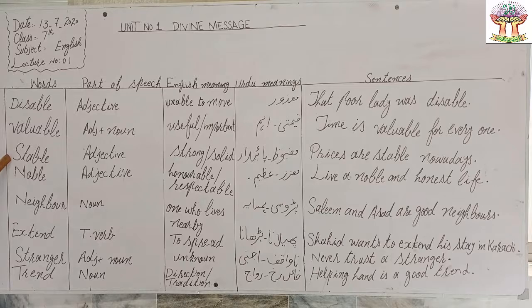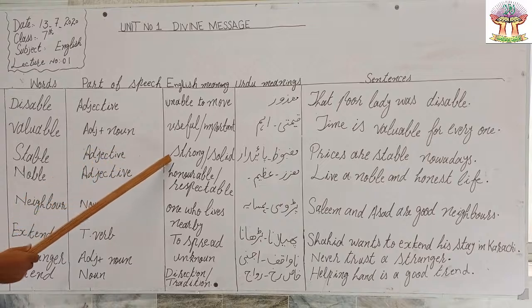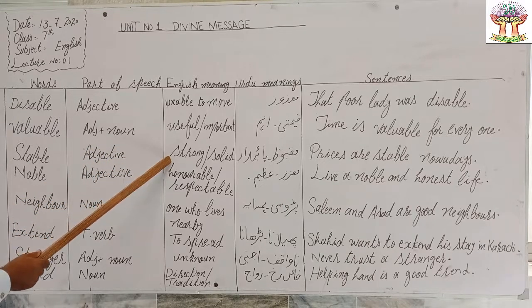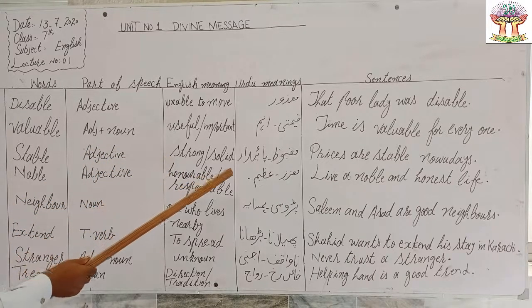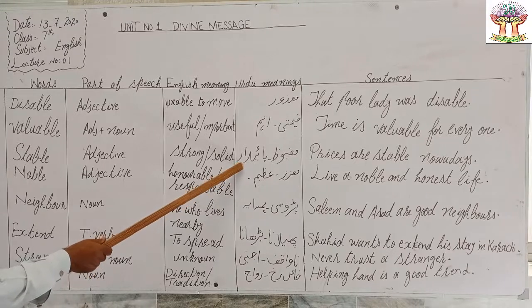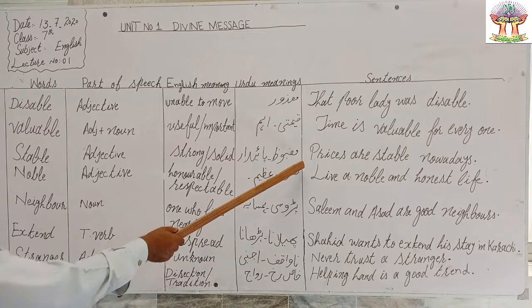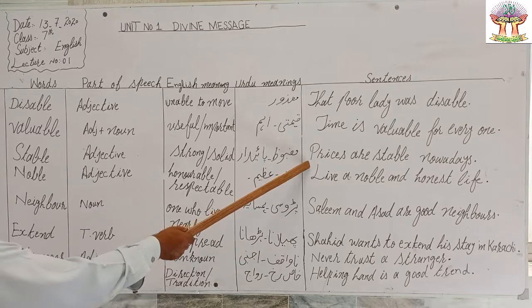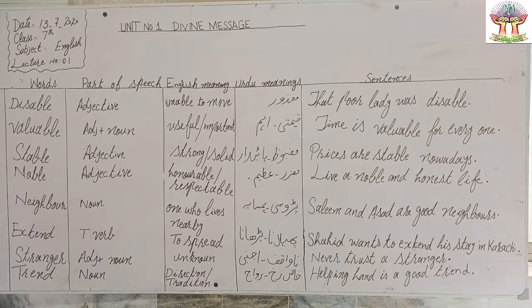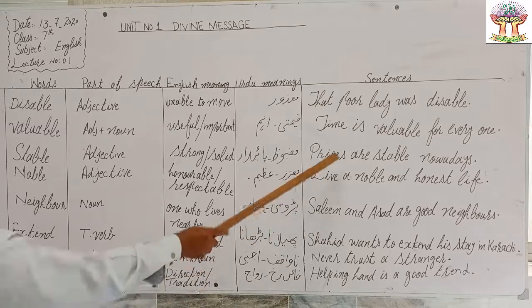Third word is 'stable.' It is an adjective in parts of speech. English meaning: strong, solid. Urdu meanings: mazboot, paida. Sentence: 'Prices are stable nowadays.'